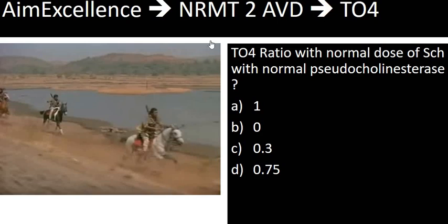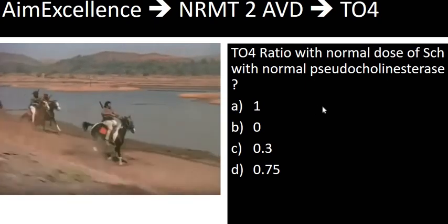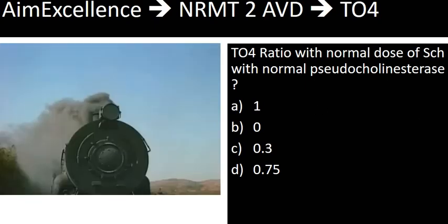In this NRMT2 ABD video, we are going to discuss about the train-of-four phenomenon. The question is: with a normal dose of succinylcholine and normal pseudocholinesterase levels, what is going to be the train-of-four ratio? To answer it correctly, we have to have a clear understanding of the train-of-four phenomenon. Let's get into that particular mechanism.